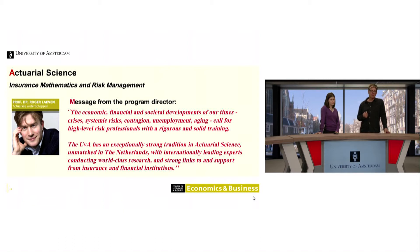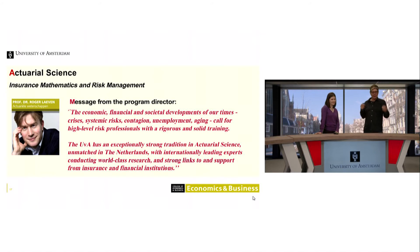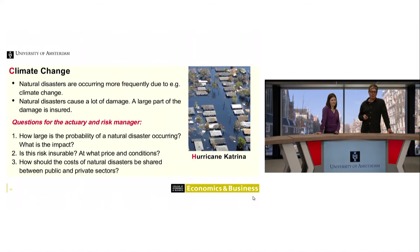Now a bit of content so you understand the differences between the fields. Actuarial Science is about insurance mathematics and risk management. It covers several cases — for instance, we have a growing concern about climate change. Climate change brings a lot of aspects, especially natural disasters: heavy storms are occurring more frequently and cause a lot of damage.